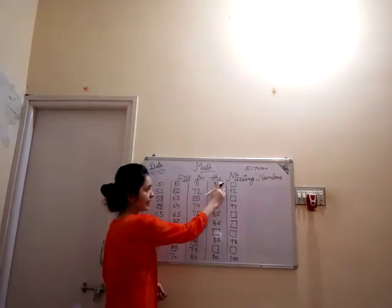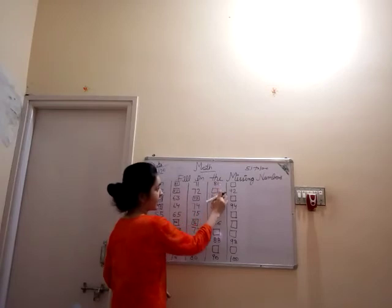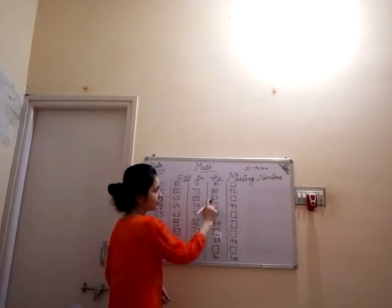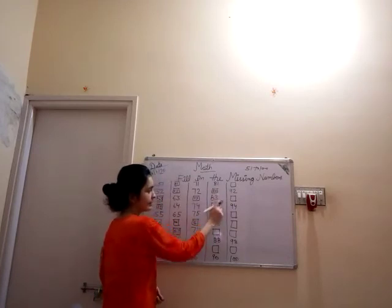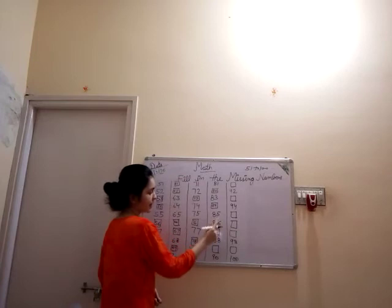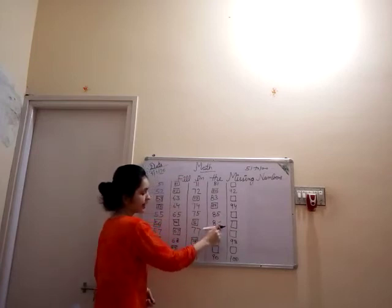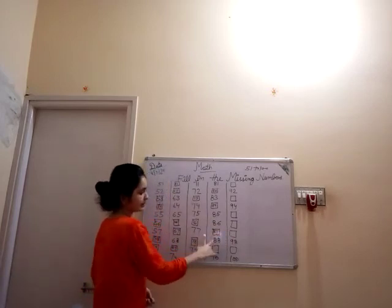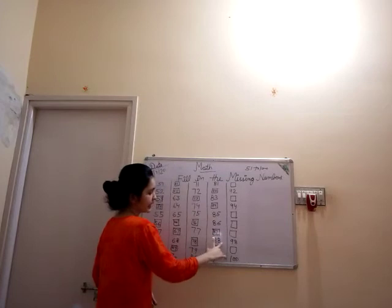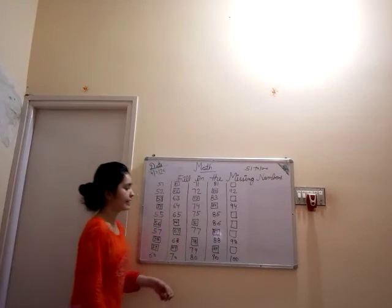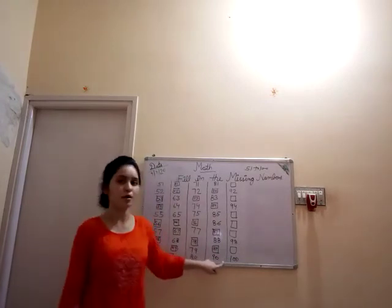80 ke bad? 8, 1, 81. 81 ke bad? 82. 82 ke bad? 83. 83 ke bad? 84. 84 ke bad? 85. 85 ke bad? 86. 86 ke bad? 87. 87 ke bad? 88. 88 ke bad? 89. 89 ke bad? 9, 0, 90.